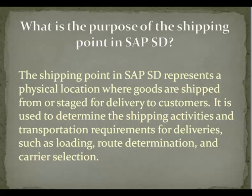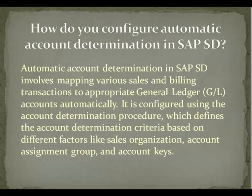What is the purpose of the shipping point in SAP S.D.? Answer: The shipping point in SAP S.D. represents a physical location where goods are shipped or staged for delivery to customers. It is used to determine the shipping activities and transportation requirements for delivery, such as loading, route determination, and carrier selection.